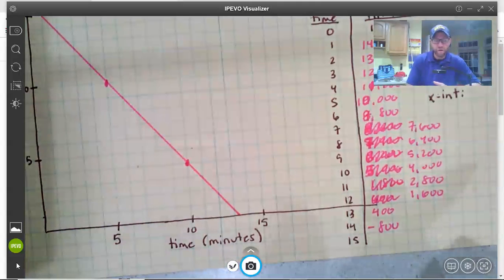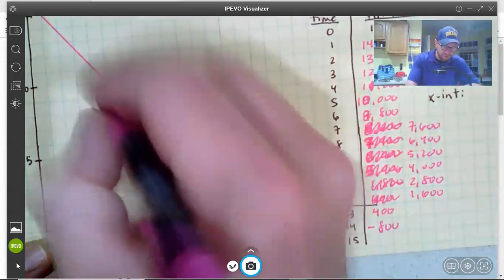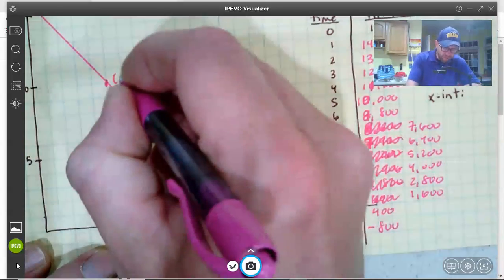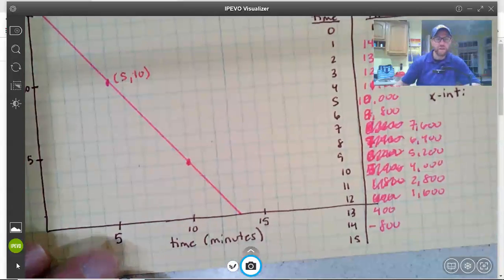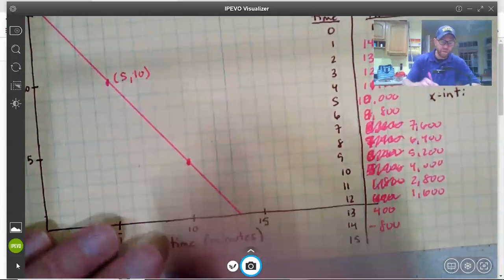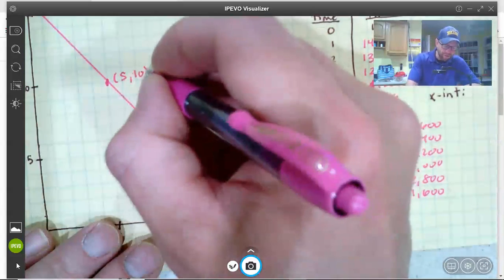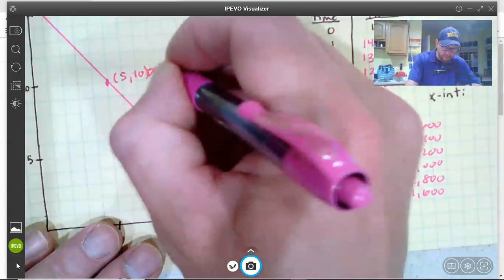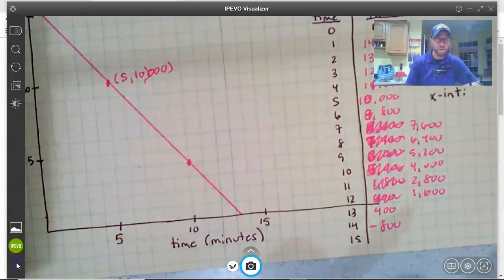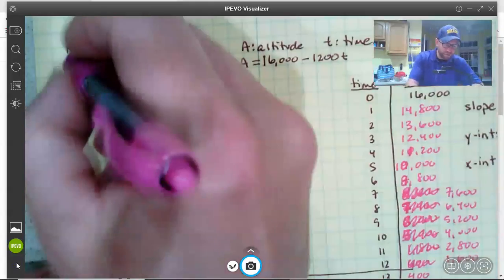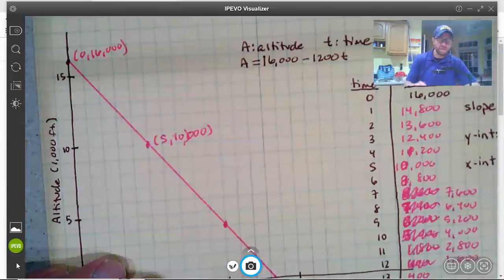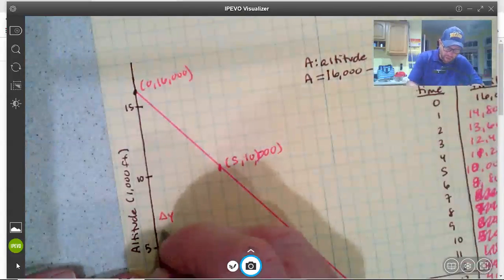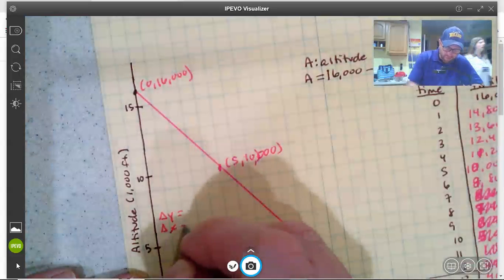So I could write the equation of this line, the slope. So I've got the point five comma 10, and we're just going to say 10 instead of... no, I might as well make it correct. 10,000. And then up here, this point is zero comma 16,000.